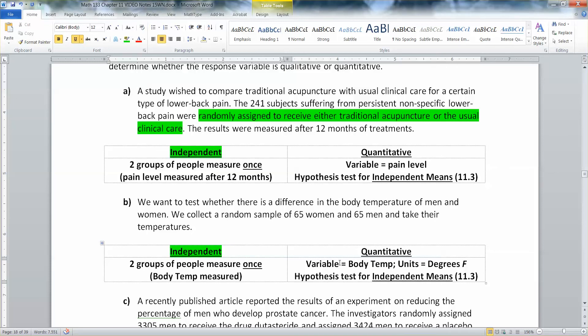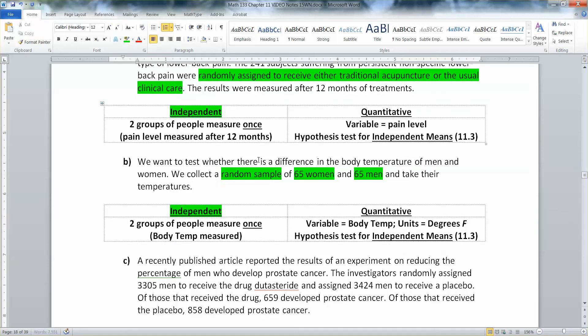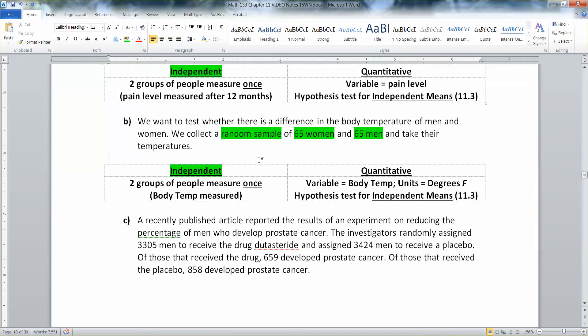Or hypothetically speaking, we could be constructing a confidence interval for independent means, right? But it's two groups of people measured once. You've got your 65 women and 65 men, and they have nothing to do with each other, right? That is completely independent. And again, husbands and wives, brothers and sisters, that would not be. But these are just random men and women. That's independent.